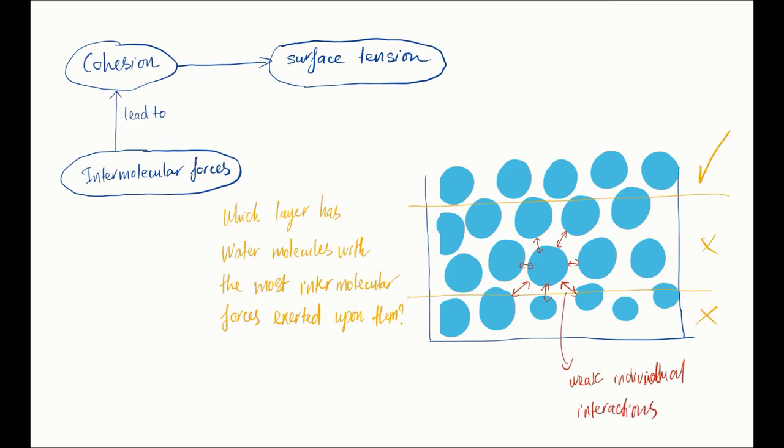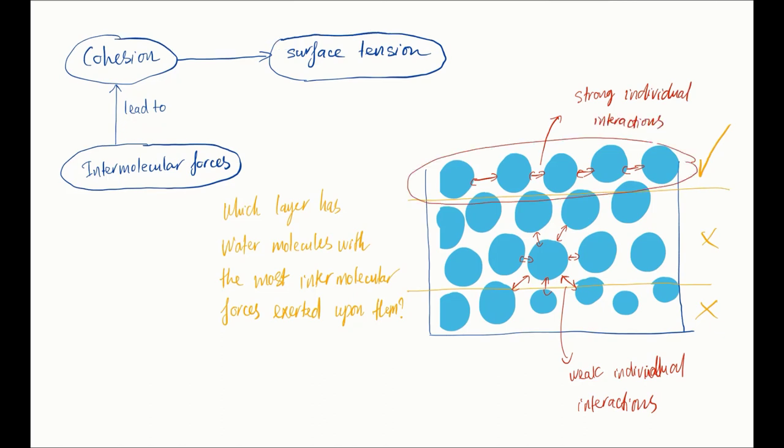Sure, the oxygen needs to share its electron density and the hydrogen needs to take electron density from those oxygen of other molecules. But there is a threshold to how much the oxygen can share and of how much the hydrogens want to take. The water molecules at the top have less water molecules to exert intermolecular forces upon, hence individually those forces are stronger, forming a strong layer at the top.